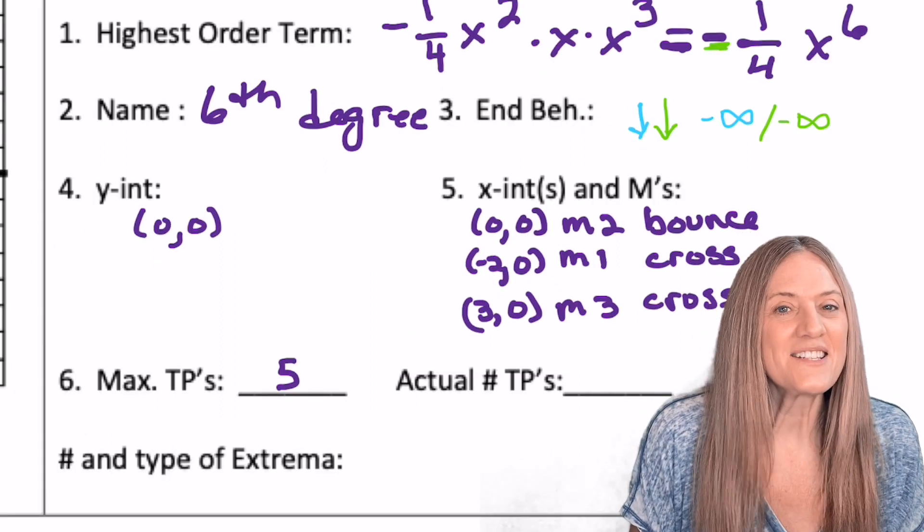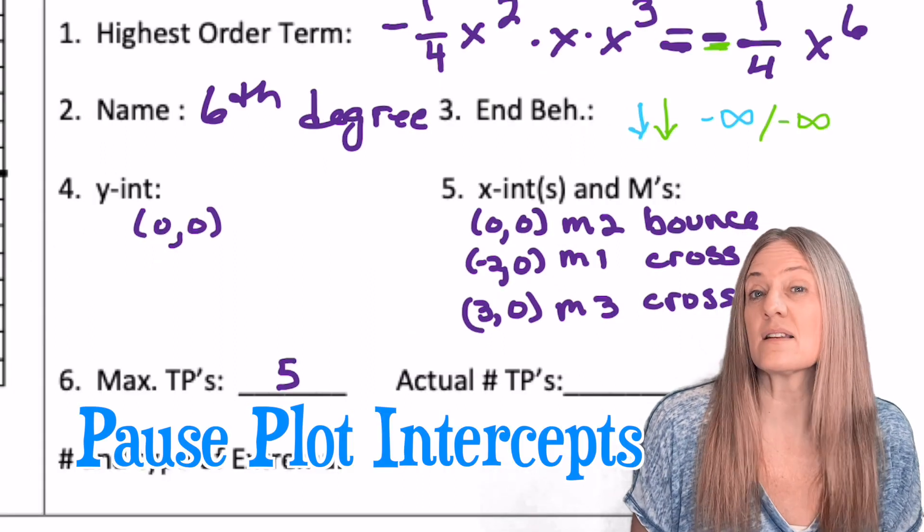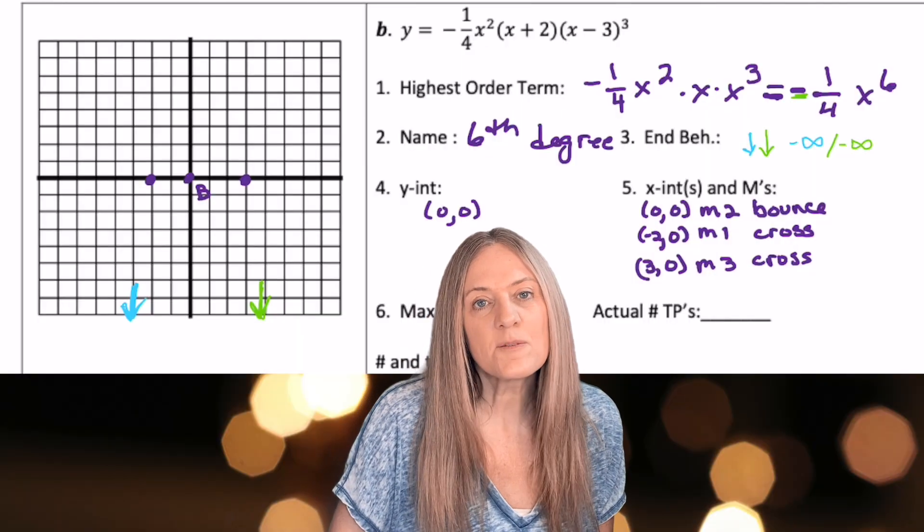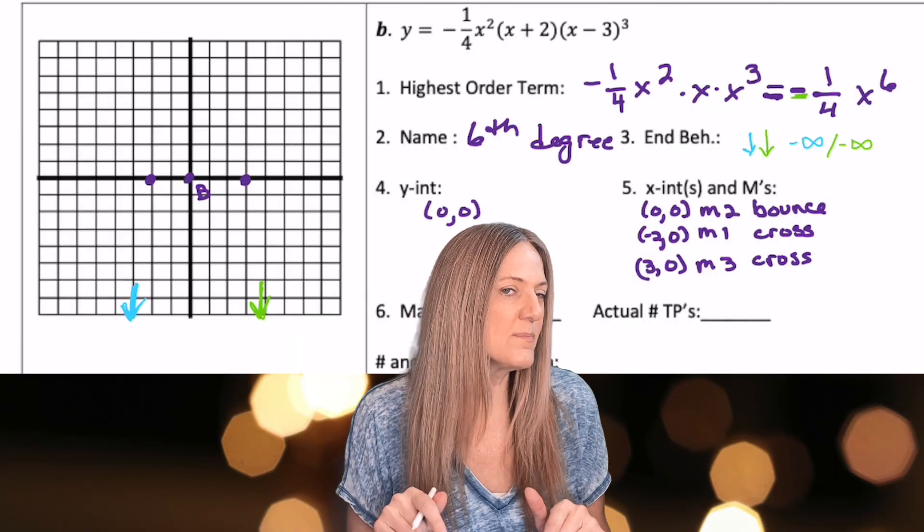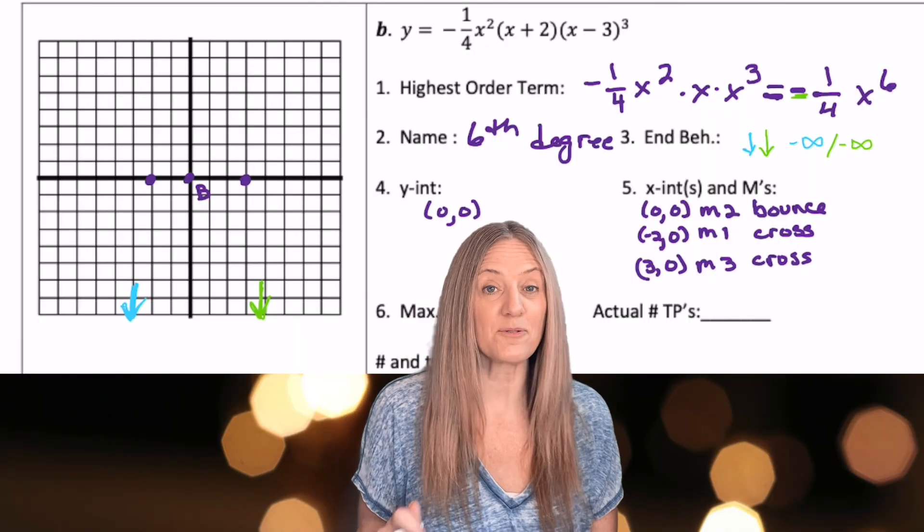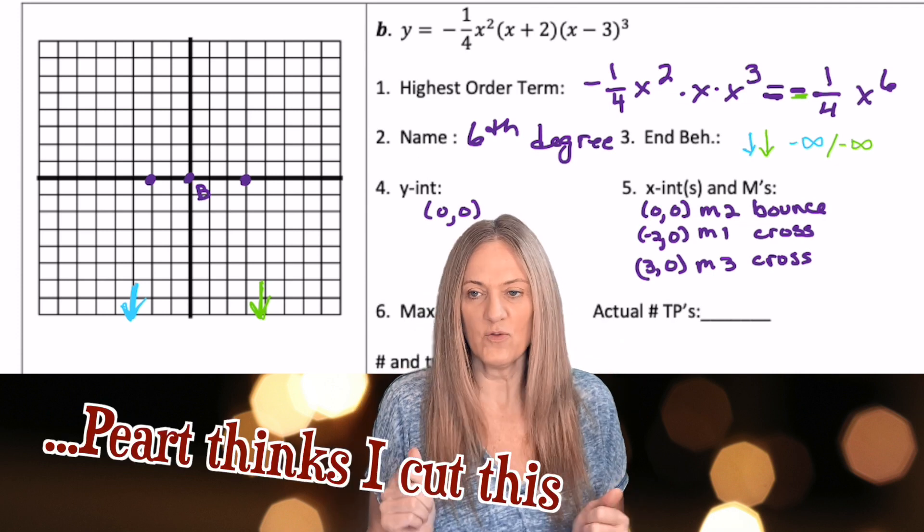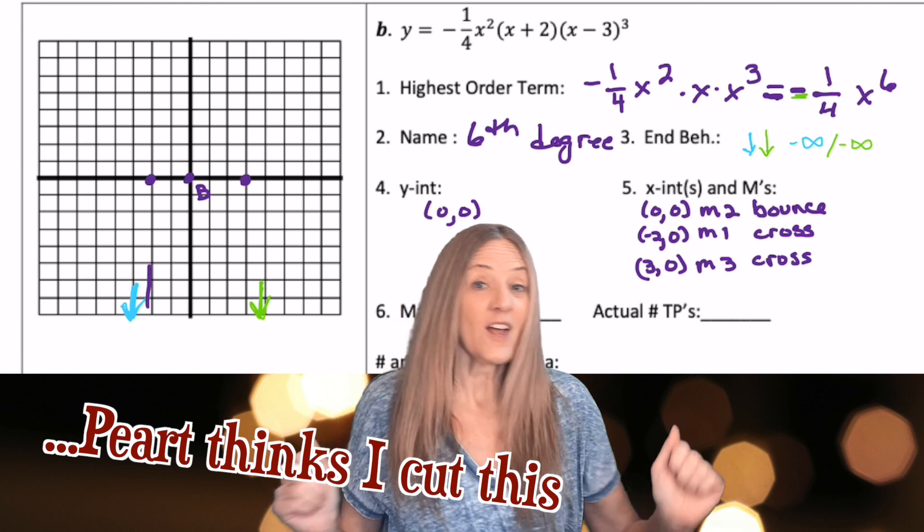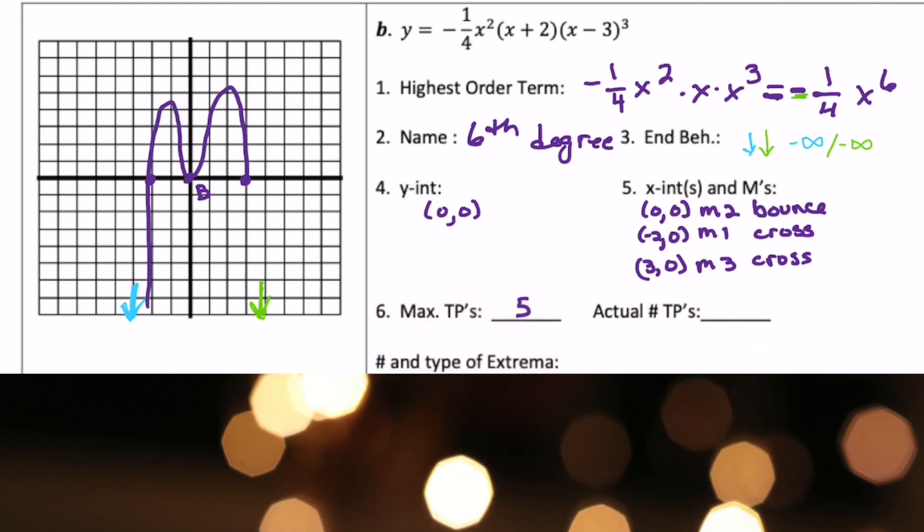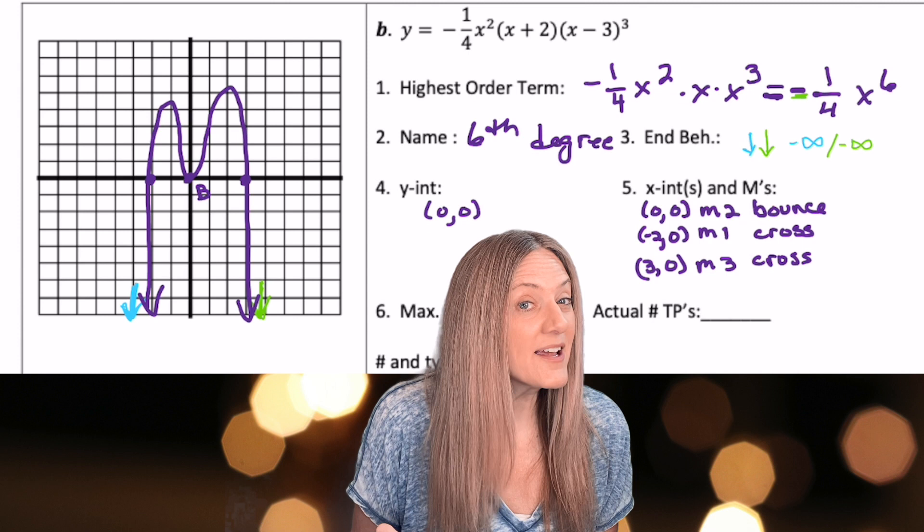Now that the inventory is done, it's time to plot the points. Be sure and put a B next to that bounce. I have the points plotted and I went ahead and put in the end behavior. Now we're ready to connect. Remember, we're starting down, negative infinity, moving on up. Moving on up to the top. Does yours look kind of like mine?